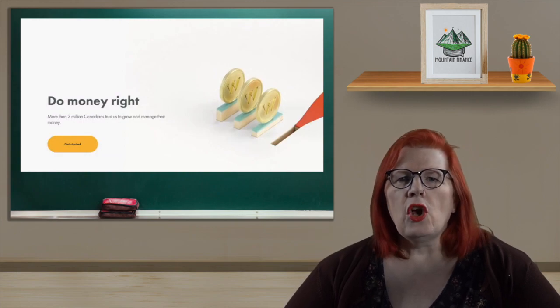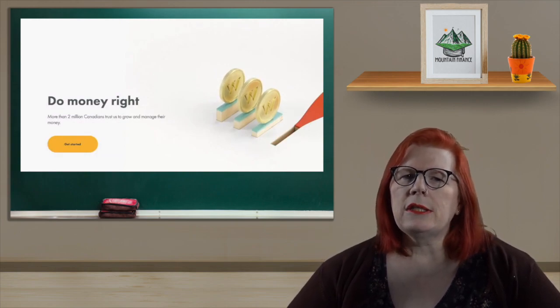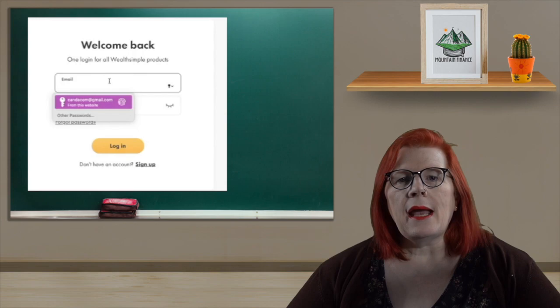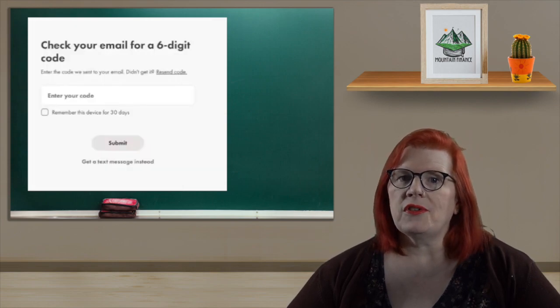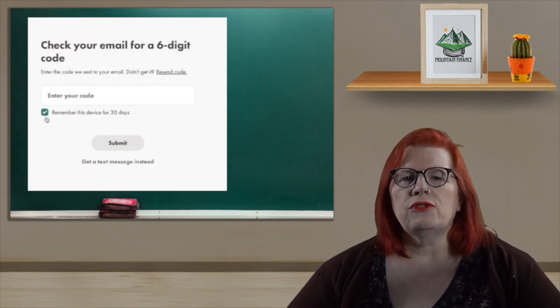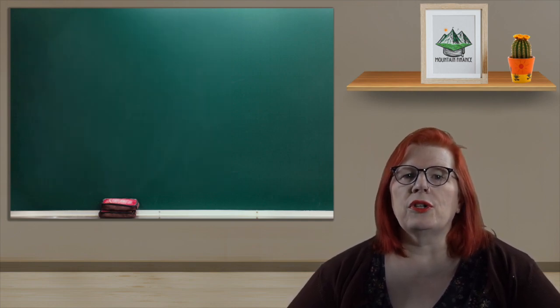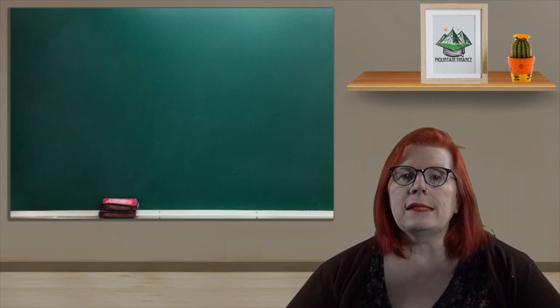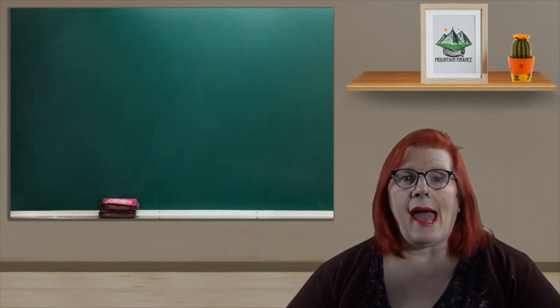To begin, we will head over to the Wealthsimple page and log in. It may ask you for a six-digit code sent to your email as an extra layer of security. If so, just grab that from your email and enter it so you can log in. Once you are into the site, you want to click on Tax.